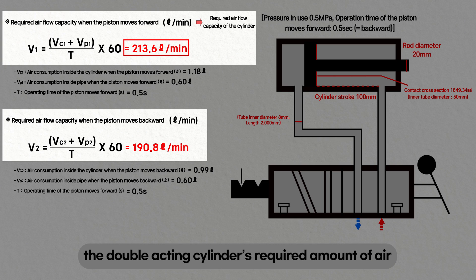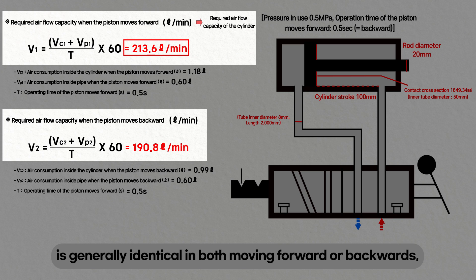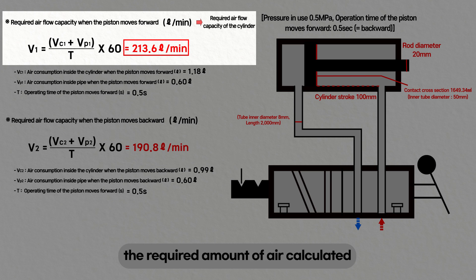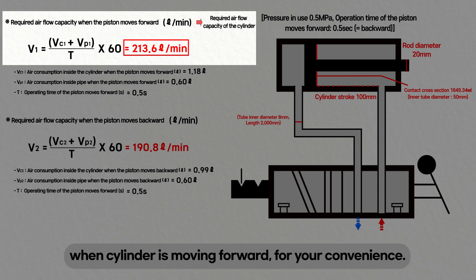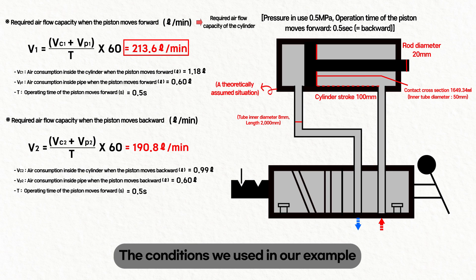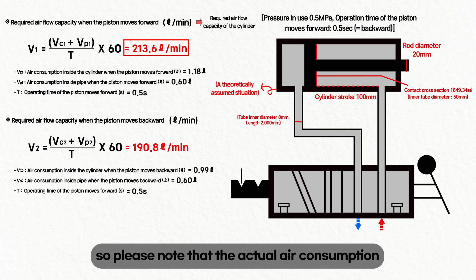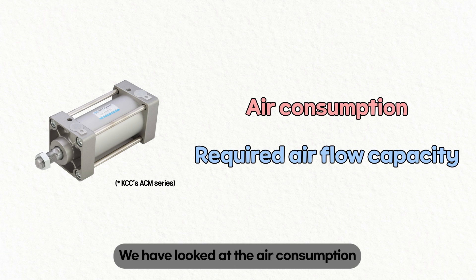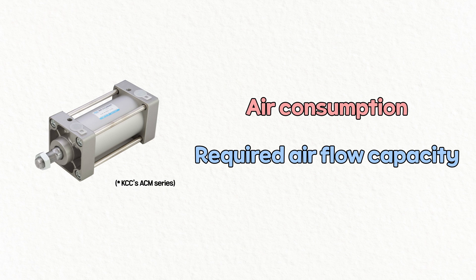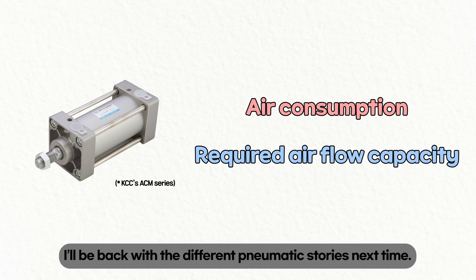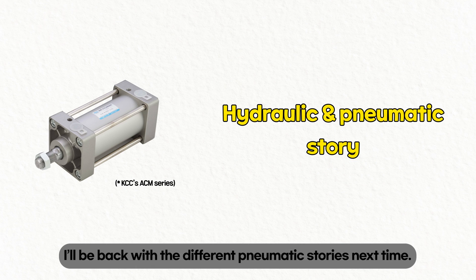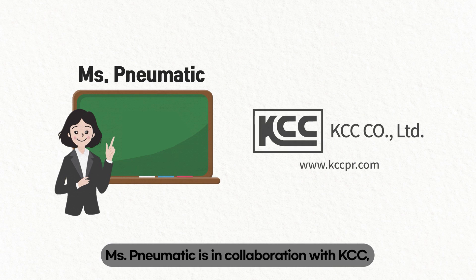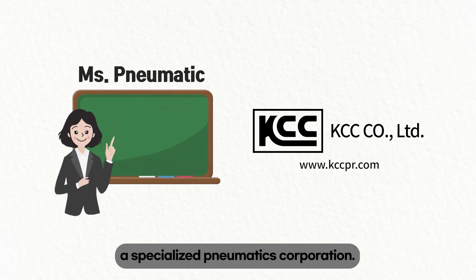Additionally, please note that the conditions used in our example are set for convenience of calculation, so the actual air consumption and required air amount may differ depending on the environment. We have looked at air consumption and required air volume. I hope this was helpful in understanding pneumatic cylinders. This content is produced by Nomadic's Pneumatics in collaboration with KCC, a specialized pneumatics corporation. Thank you.